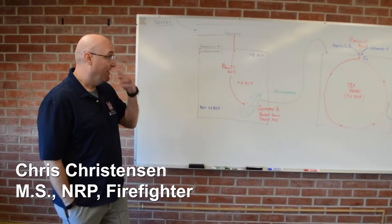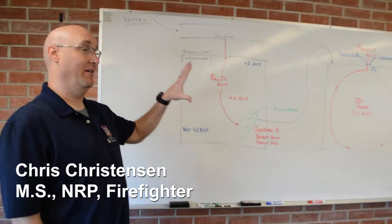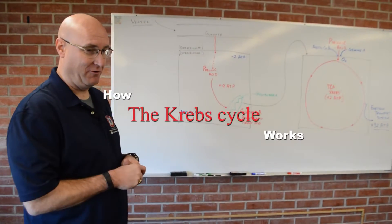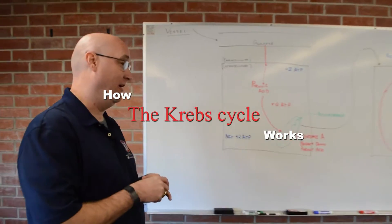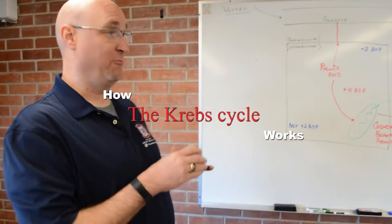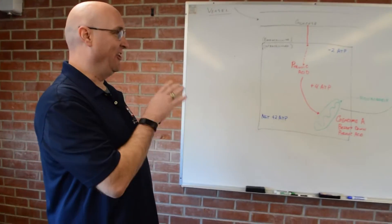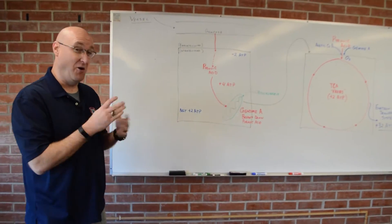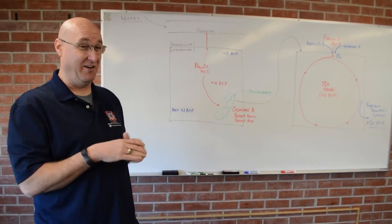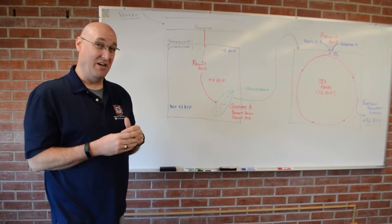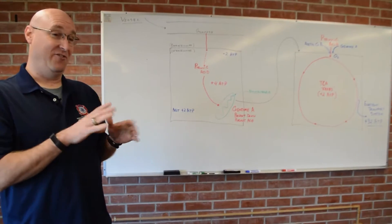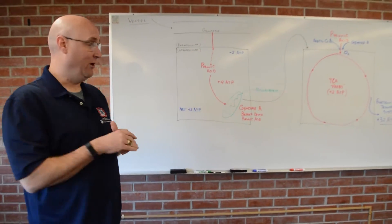All right, so up here on the board we've got a basic illustration of what you as a paramedic student should know about the Krebs cycle. Now if you take a look at your textbook or any other textbooks out there, there is a lot of stuff that can be really confusing for students. They talk about other cofactors and coenzymes and use all these abbreviations and acronyms. We're not really going to go into that because that just confuses a lot of students and sometimes it confuses me as well.